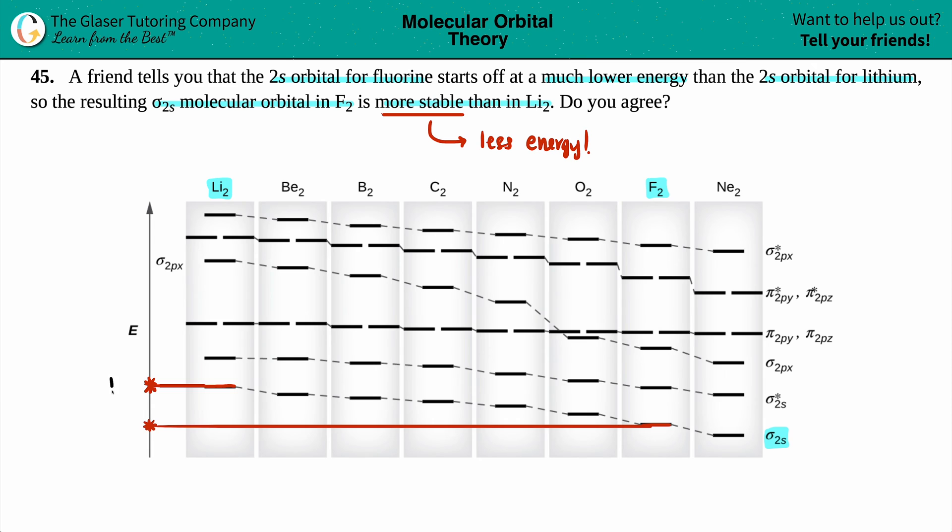So we have Li2 up top and F2 for the bottom. So whose sigma 2s molecular orbital in F2 is more stable? It is F2 because it has less energy. So that is true.